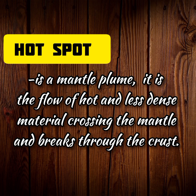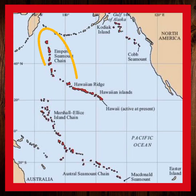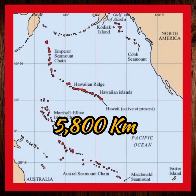A hot spot is a mantle plume, seemingly coming from the outer core of our planet. It is a flow of hot and less dense material that crosses the solid mantle and breaks through the crust. A good example is the Hawaiian Emperor Seamount chain, a chain of ancient volcanoes created by the hot spot currently below Hawaii, which stretches over 5,800 kilometers from Hawaii to Russia.